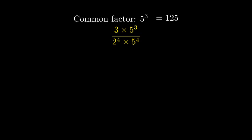After dividing by 5 cubed, we get 3 over 2 to the 4th power times 5. 2 to the 4th power is 16, so our final simplified fraction.